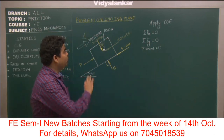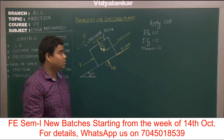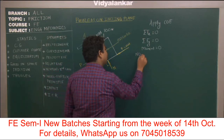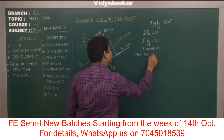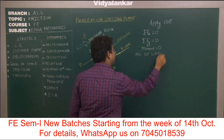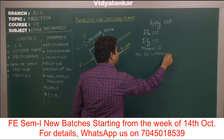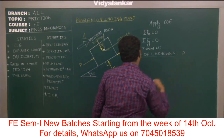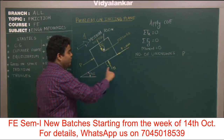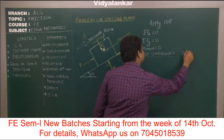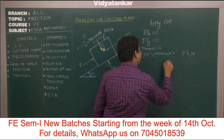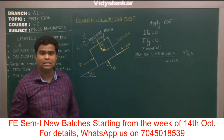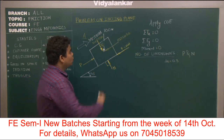First we write the number of unknowns. The unknowns are: first, force P, and second, normal reaction N. Let μ equal 0.3 — the coefficient of friction always has a value less than 1. Now apply conditions of equilibrium.